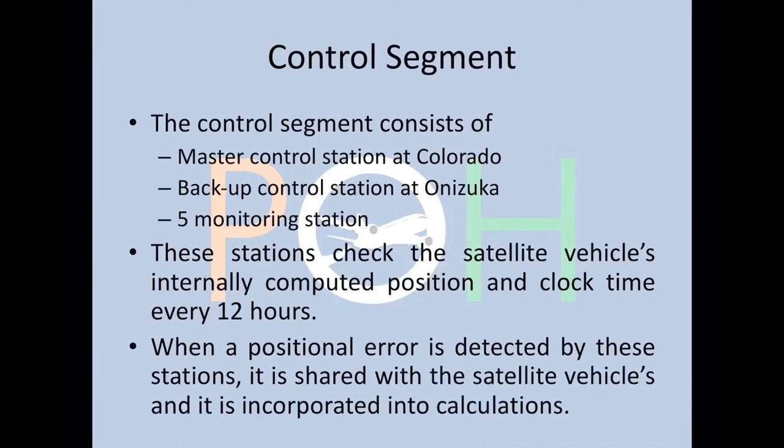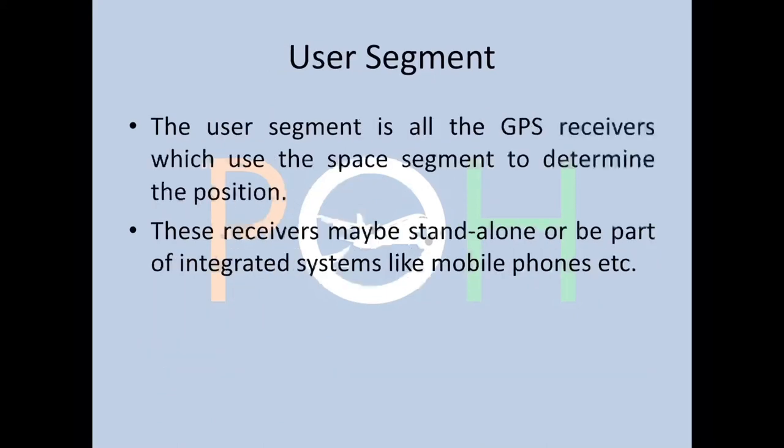The control segment consists of the Master Control Station at Colorado, a backup control station at Onizuka, and five monitoring stations across the world. These stations check the satellite vehicles' internally computed position and clock time every 12 hours. When a positional error is detected, it is shared with the satellite vehicles and incorporated into their calculations.